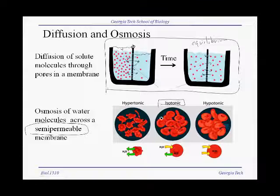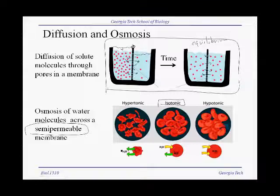What happens if we put our cells in a high-salt solution like seawater? Seawater has a much higher concentration of salt, or solute molecules, than the solute molecules inside our cells. As a result, the water inside our cells will go out. Our cells will lose volume, and they will shrivel up, as shown here.